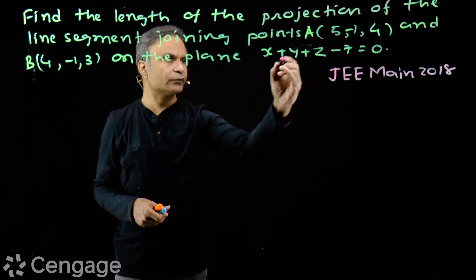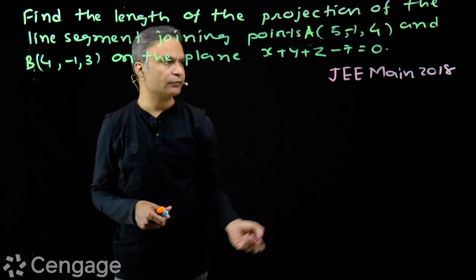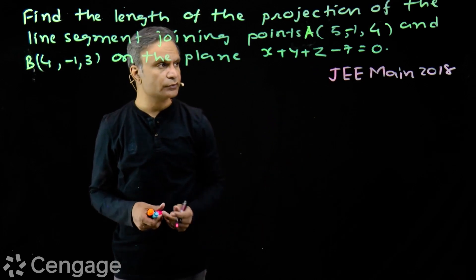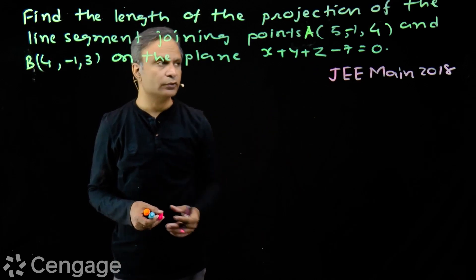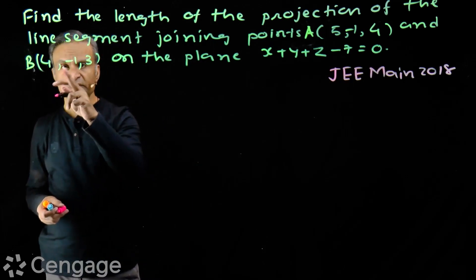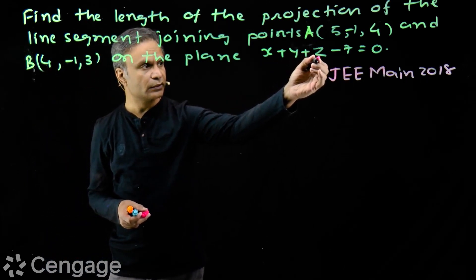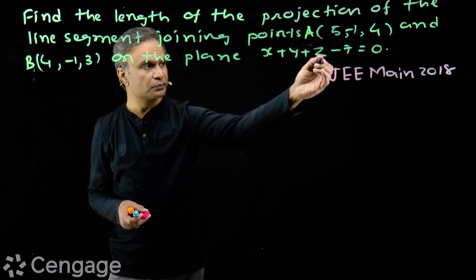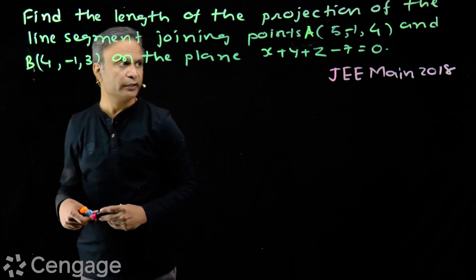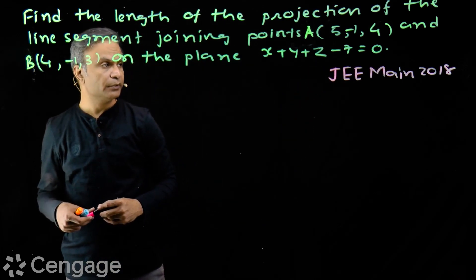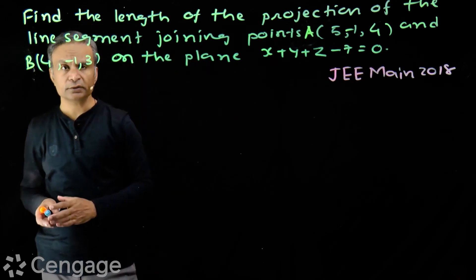For point A, we substitute (5, -1, 4) and get 5 - 1 + 4 - 7 = 1, which is non-zero. So point A does not lie on the plane. For point B, we substitute (4, -1, 3) and get 4 - 1 + 3 - 7 = -1, which is also non-zero. So point B also does not lie on the plane.